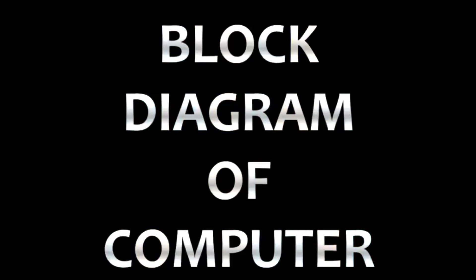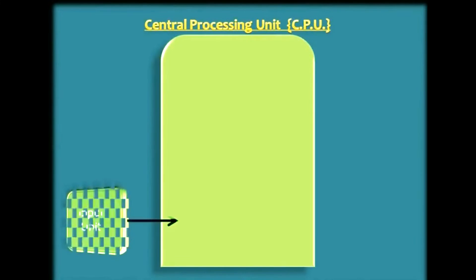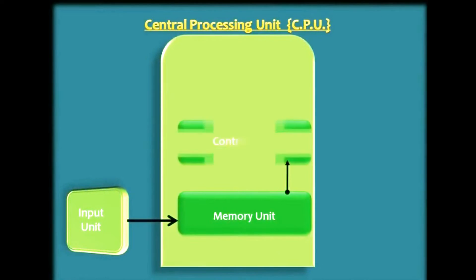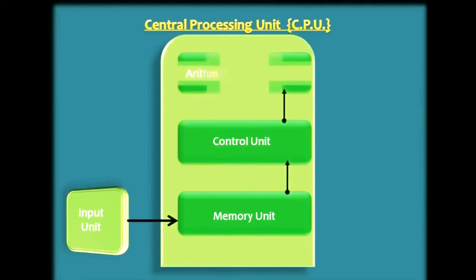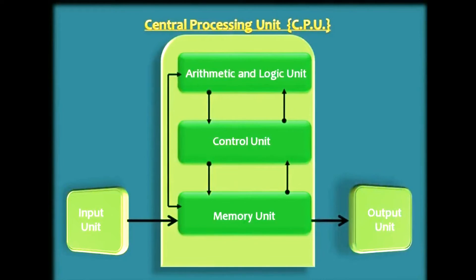Block diagram of a computer. Working of the Central Processing Unit, also called CPU: the data from the input unit goes to the memory unit, from there it goes to the control unit, and then is passed to the arithmetic and logic unit. The exchange of data is directly between the memory unit and the arithmetic and logic unit. All this data is then passed to the output unit.